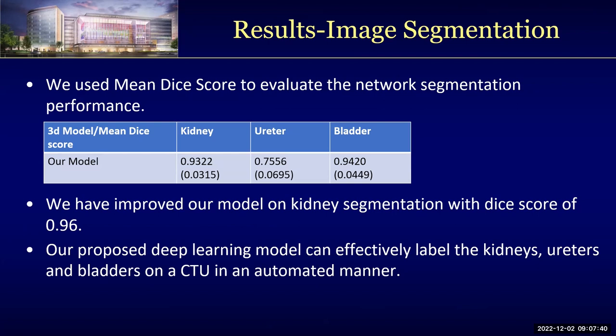In our later work, we improved our model just for kidney segmentations with an expanded dataset. Our current model achieved a dice score per kidney of 96%. From these results, we can see that our proposed deep learning model can effectively label the kidneys, ureters, and bladders on CT urograms in an automatic manner.